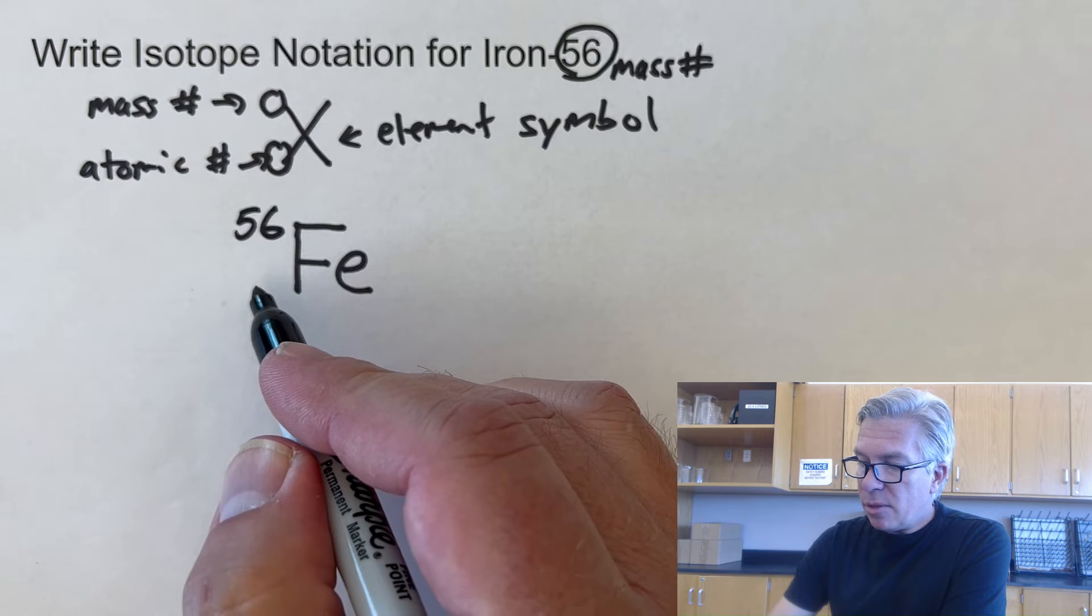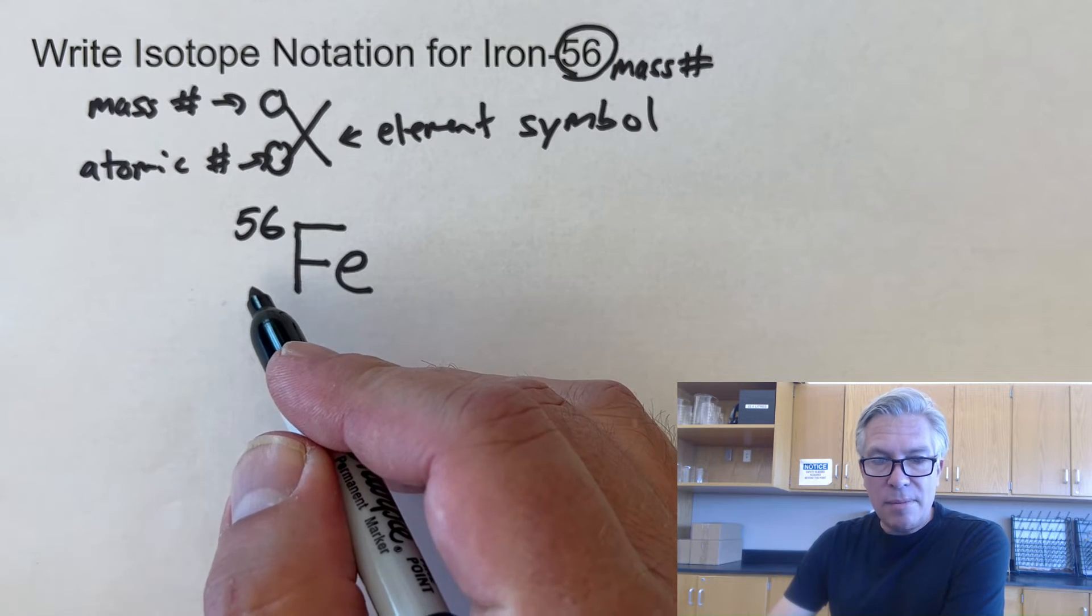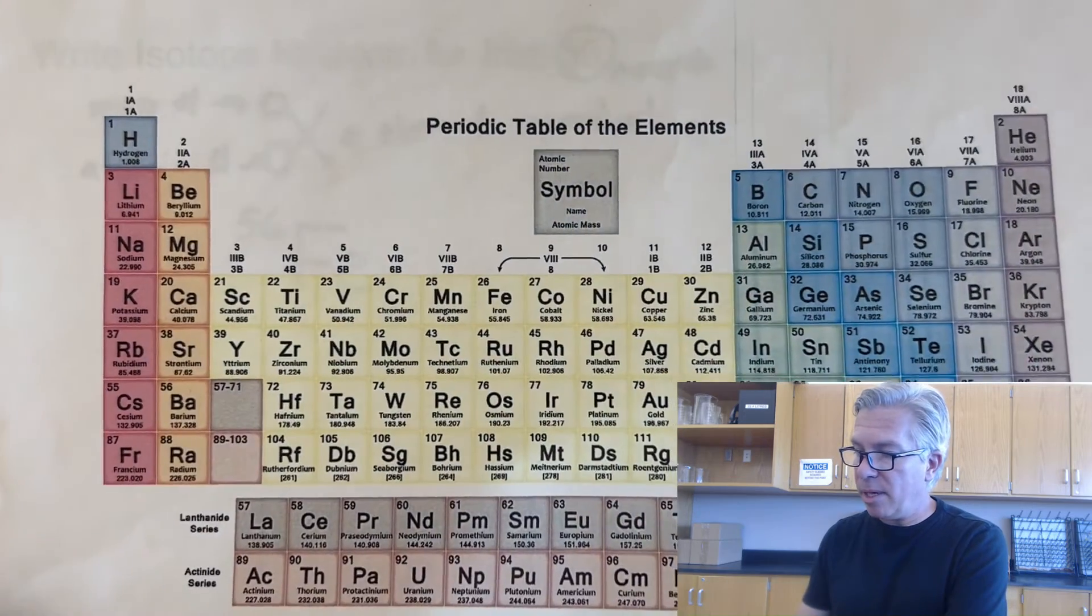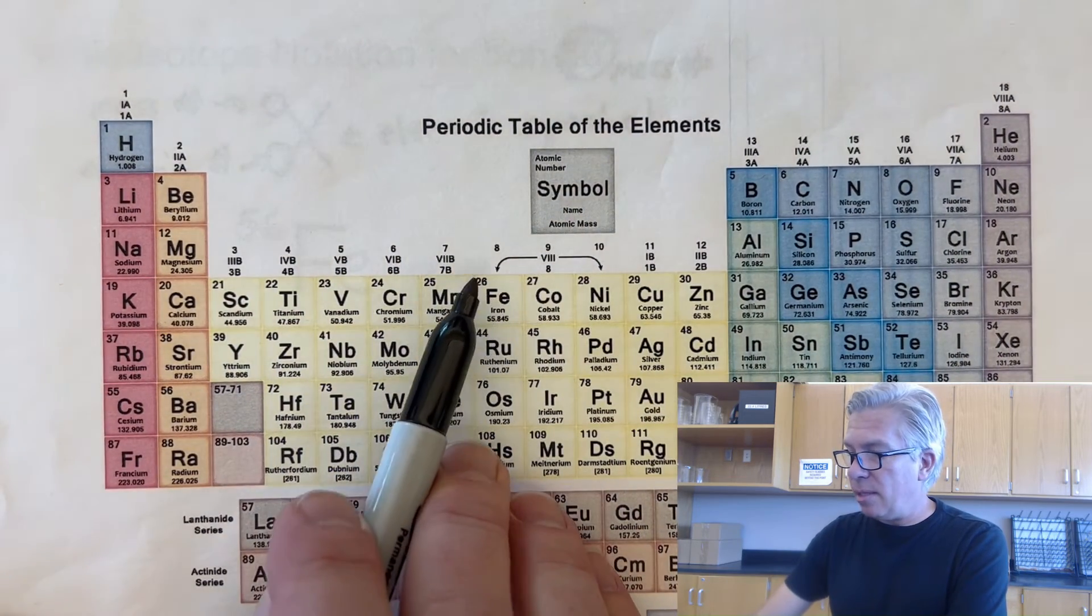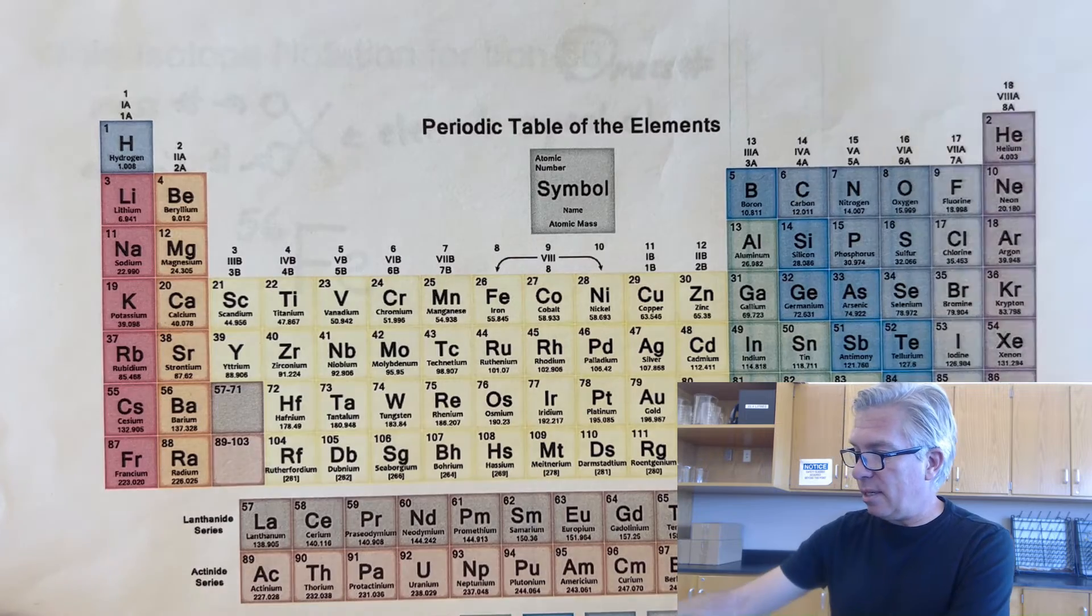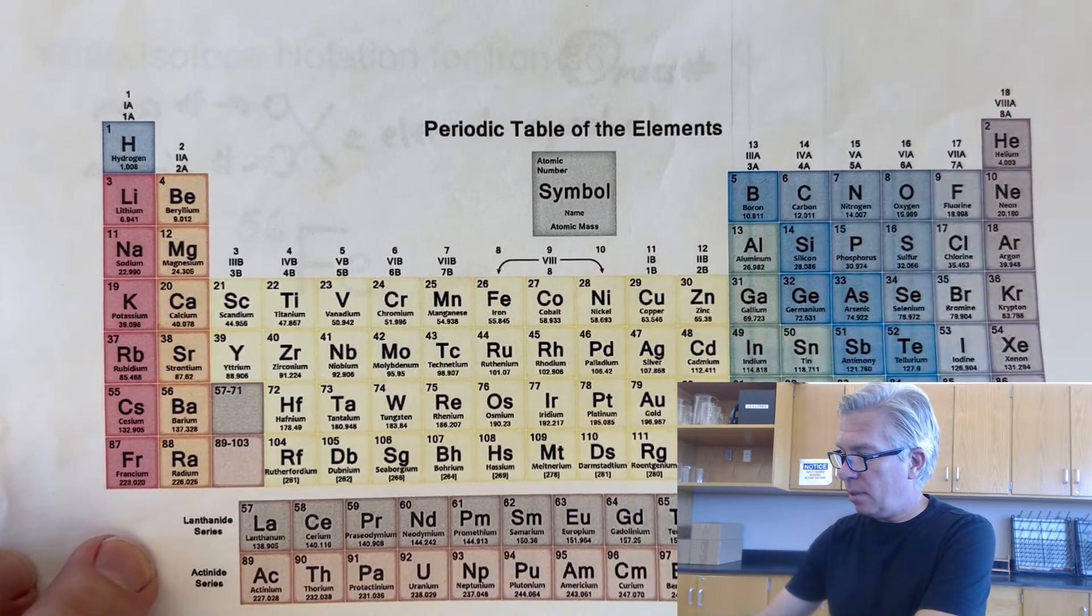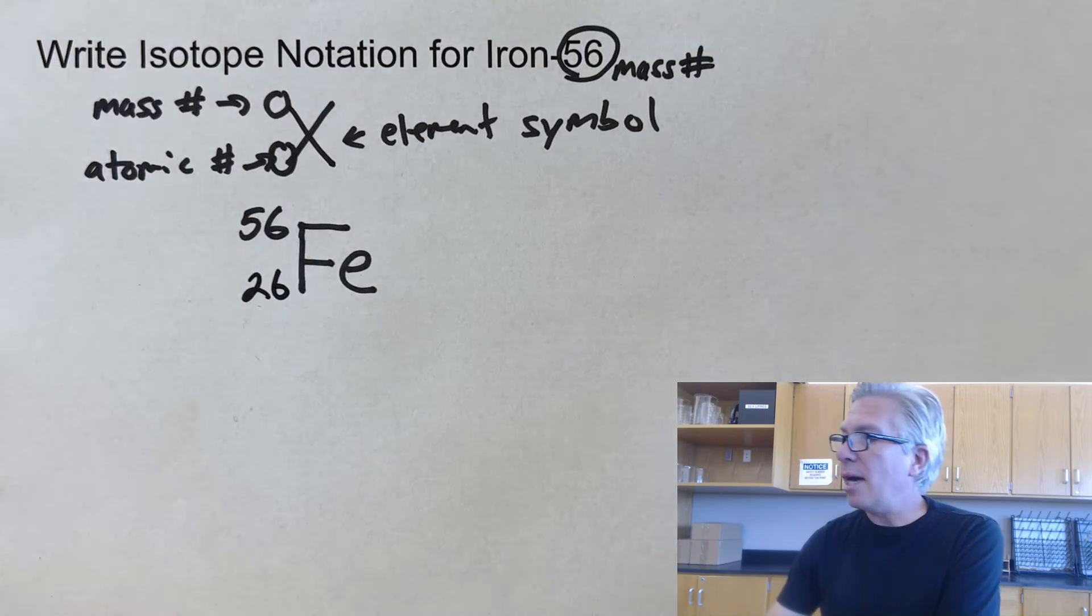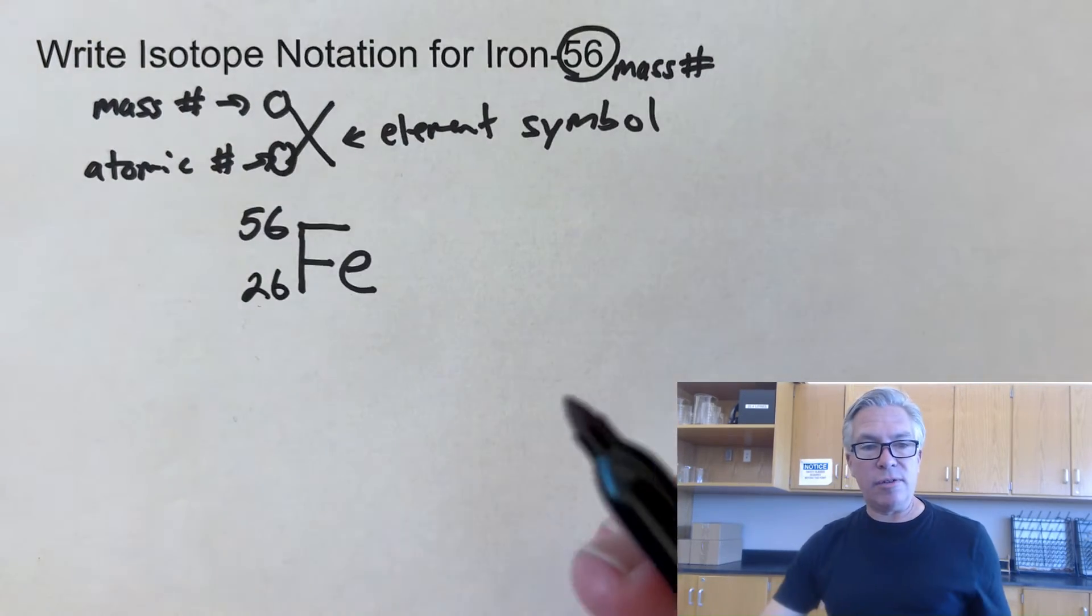And then I need a number for the bottom. And this number, the one on the bottom, don't ever guess about it. You can simply go to your periodic table, find your element and put that number 26 in the bottom. So let's get that out of the way. And that's 26. And that would be isotope notation for iron-56.